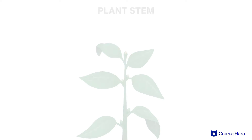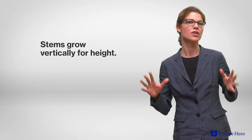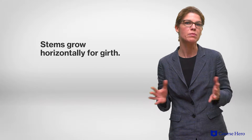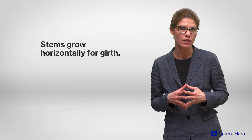Even the slenderest plant stem is a complex structure comprised of multiple layers and cells with dedicated functions. The structure, regardless of height or girth, forms a shoot system, where the stem is the foundational element from which branches, leaves, and flowers grow. Stems grow vertically, making plants taller, and horizontally, providing plants with increased girth.